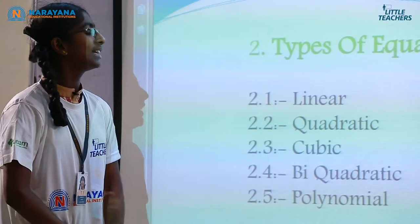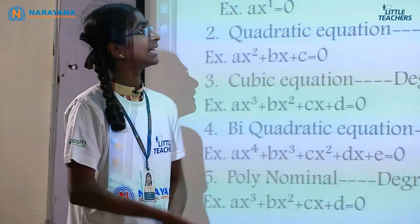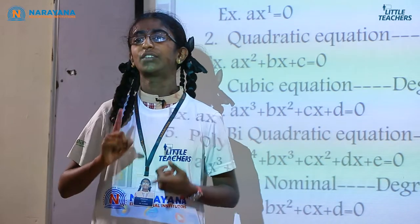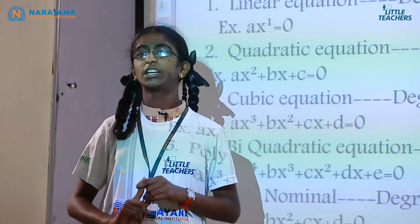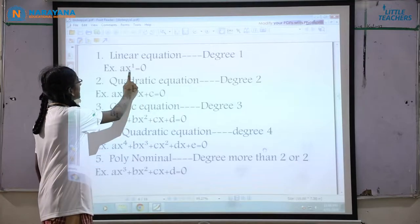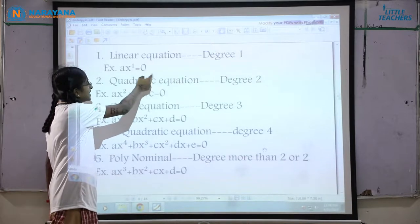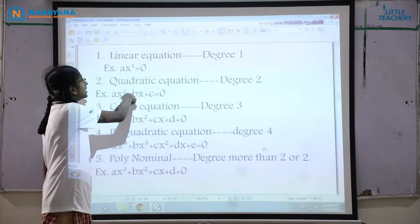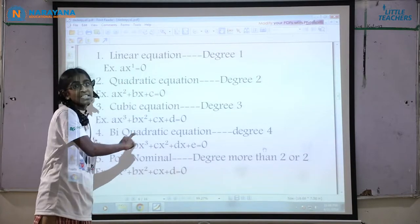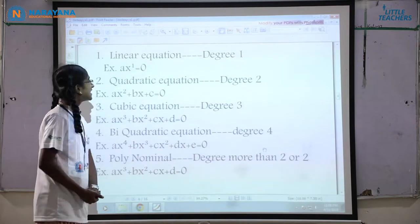First, linear equation: the equation which consists of degree 1 is called a linear equation. For example, ax plus b equal to 0 (where x has power 1). This is a linear equation as the degree is 1.